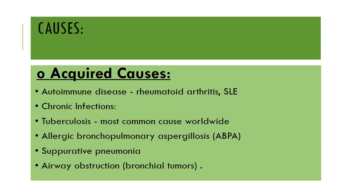Acquired causes include autoimmune diseases like rheumatoid arthritis and SLE, chronic infections like tuberculosis which is the most common cause worldwide, allergic bronchopulmonary aspergillosis, suppurative pneumonia, and airway obstruction due to bronchial tumors. These all can lead to bronchiectasis.